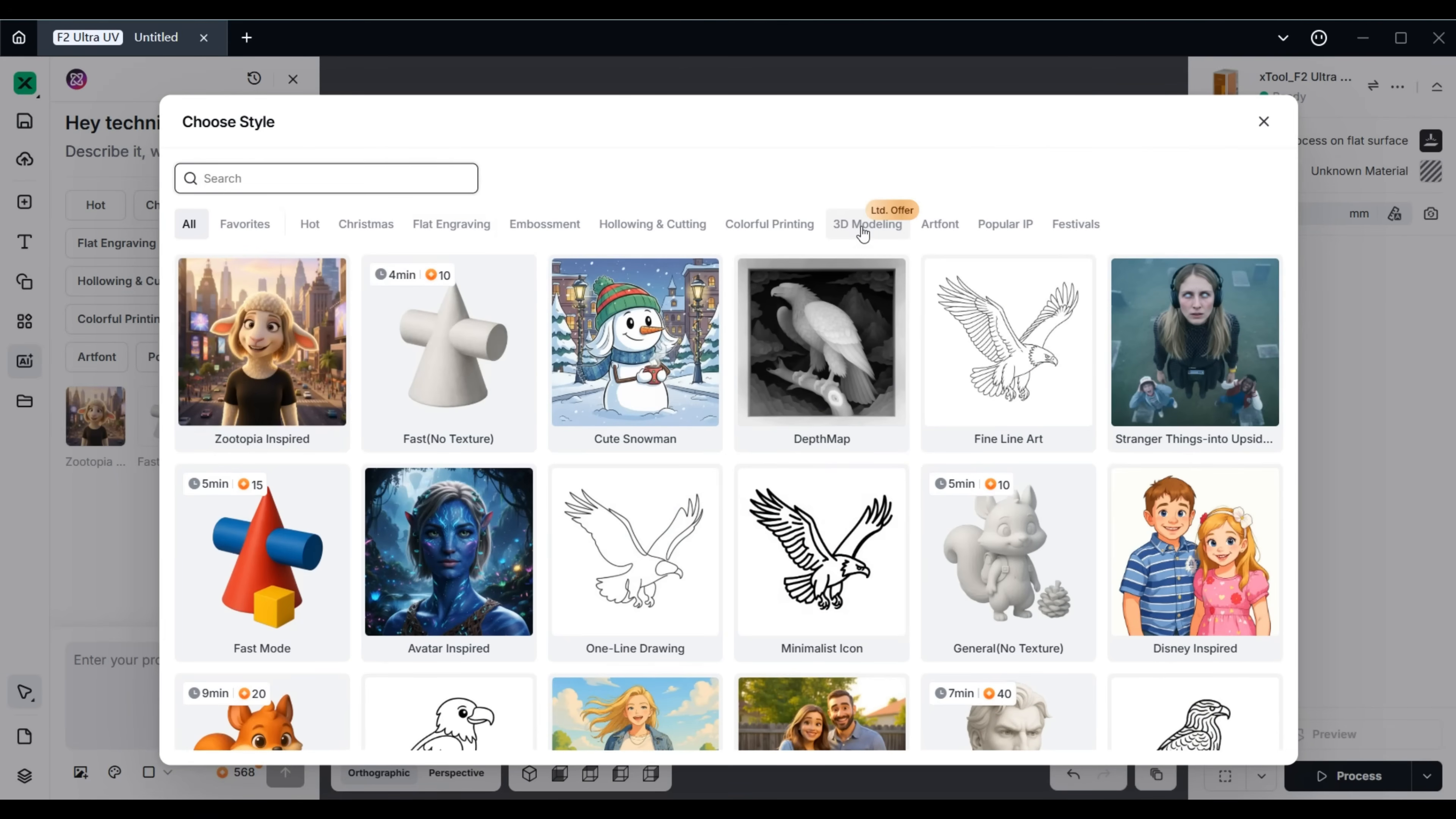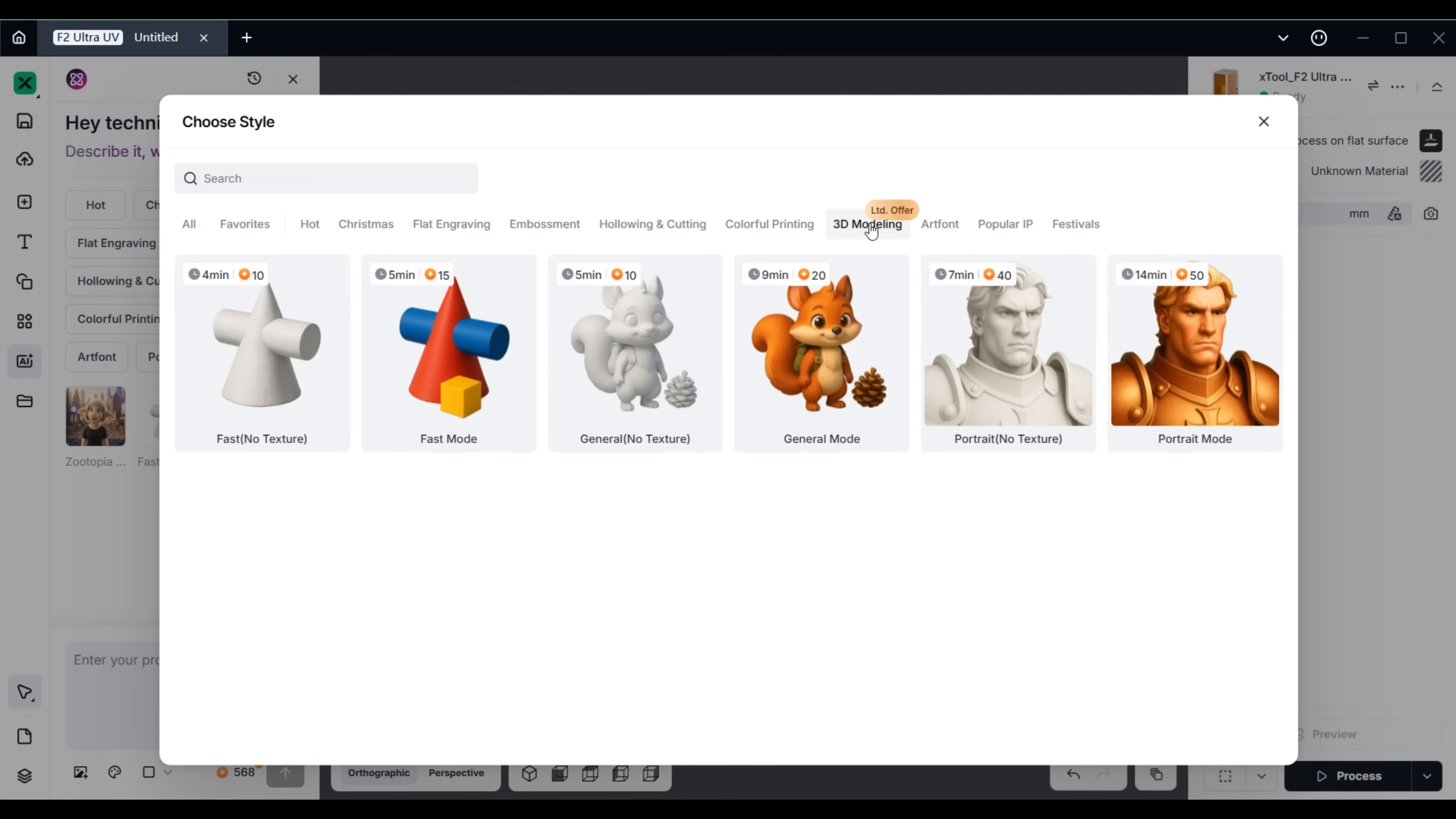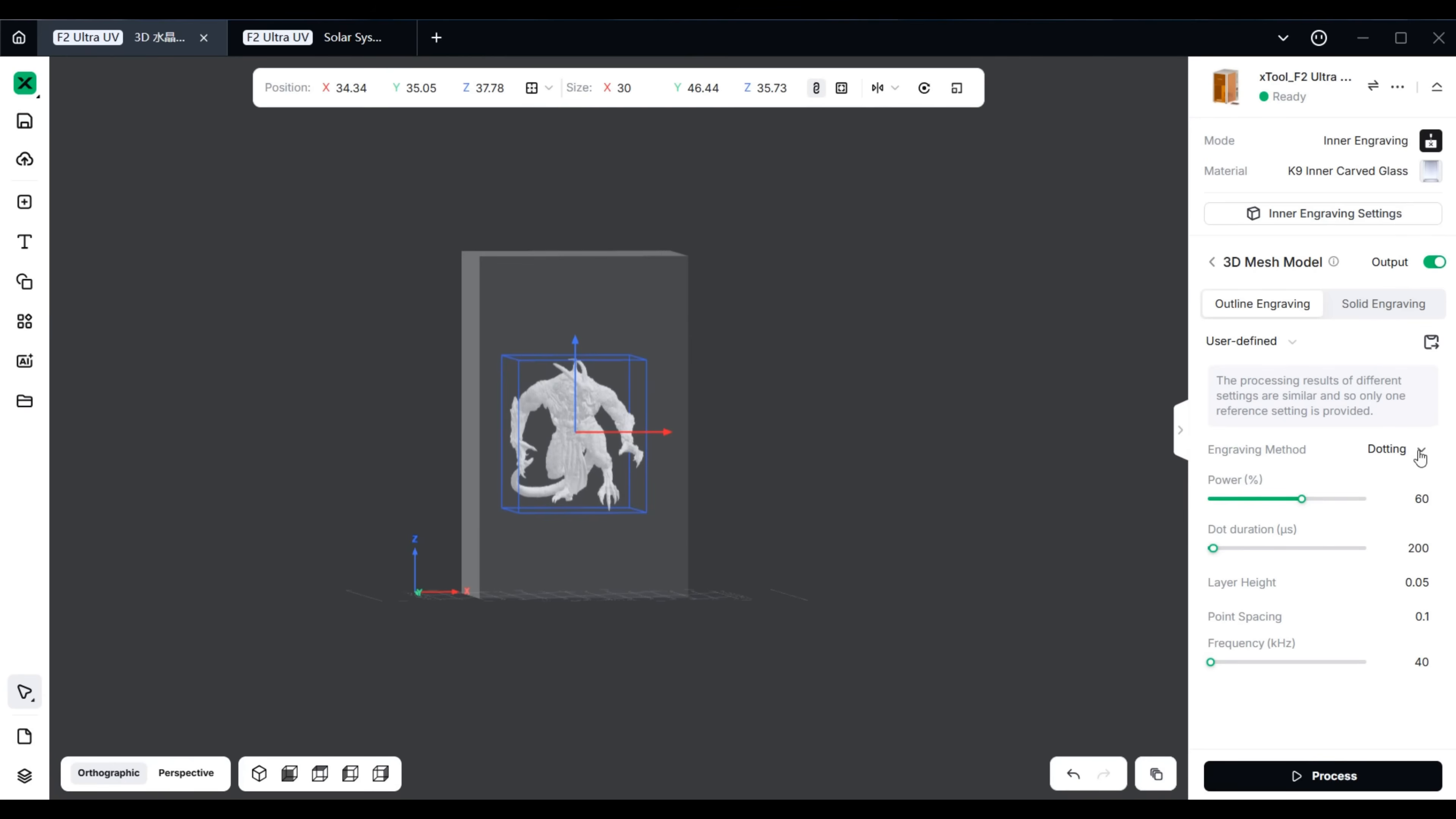For finer detail 3D crystal engraving, I recommend setting a smaller layer height and dot spacing. For example, the engraving parameters for this 3D crystal piece were set to the dot-thin engraving method: 0.03mm layer height, 0.05mm dot spacing, 60 power, 200 microseconds dot duration, and outline engraving.